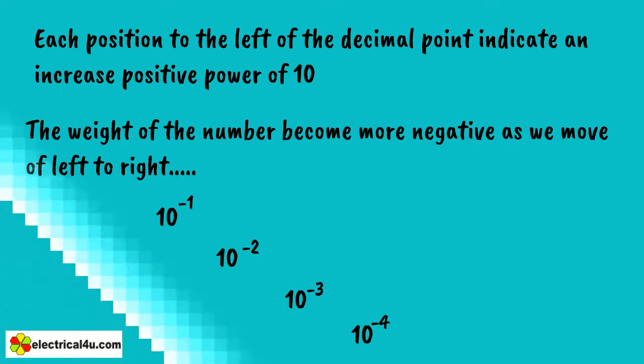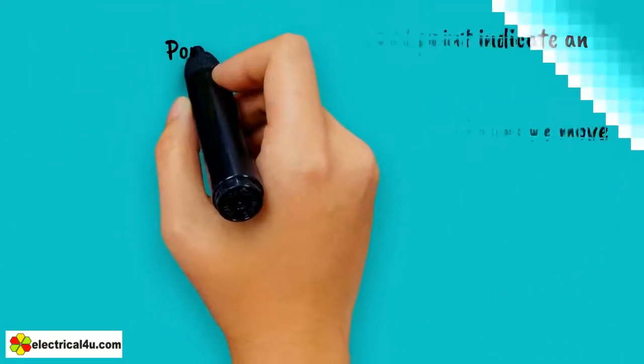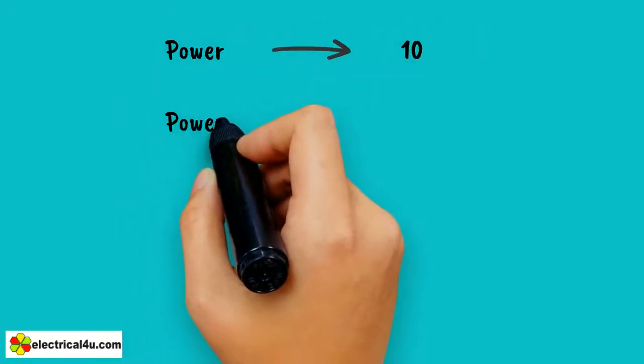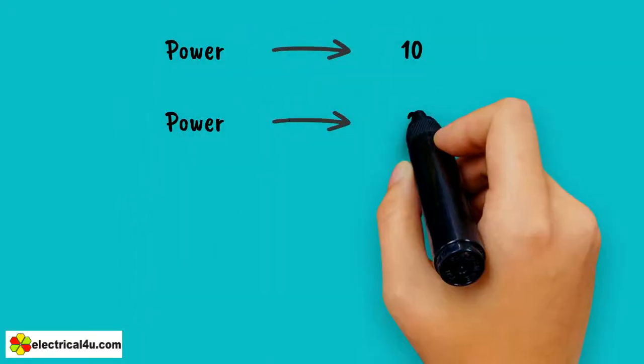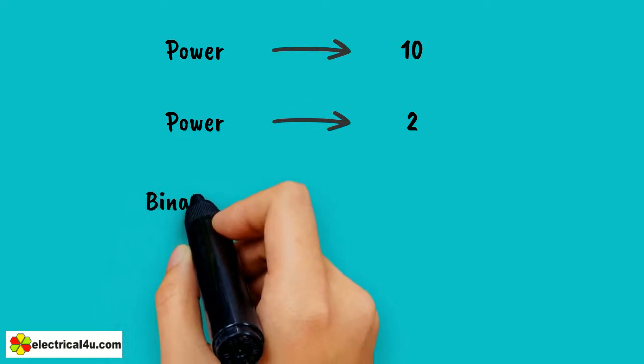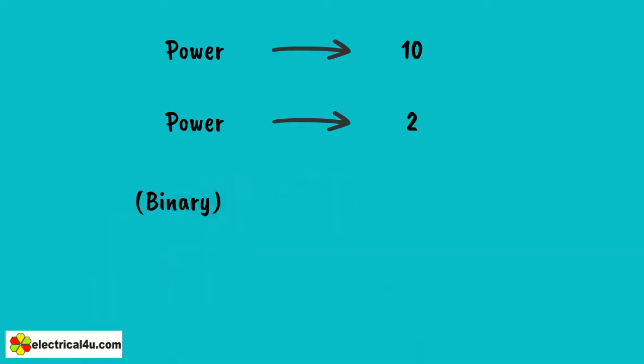But unlike the decimal system where the base is 10, the binary number system works on power of 2, giving binary to decimal conversion from base 2 to base 10.